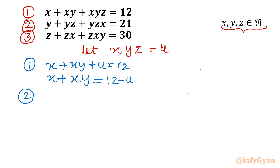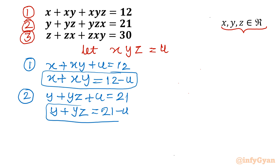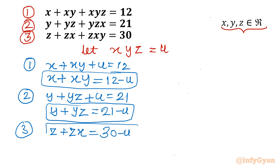The second equation we can write as y plus yz plus u equal to 21, so from here we can write y plus yz equals 21 minus u. From the third equation, similarly, z plus zx equals 30 minus u.